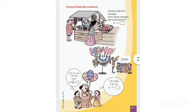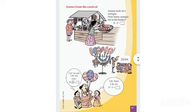From scenes at the carnival: Ammu took two oranges. How many oranges are left in the basket? There are eight oranges total in the basket. She took only two, so the remaining should be six oranges — 8 minus 2 equals 6.